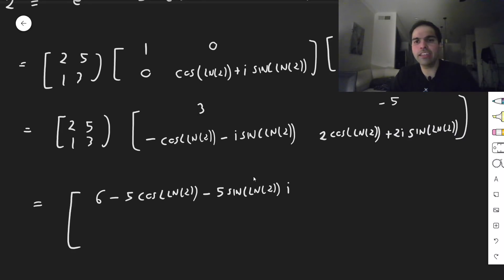We get minus 10, sorry, that's 6 and this, and then minus 10, plus 10 cosine of ln of 2, plus 10, sine of ln of 2, i, I wonder if people can even decipher this.